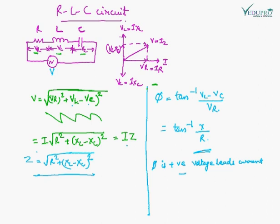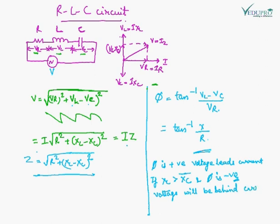If phi is positive, voltage leads the current, which occurs when XL is greater than XC. If phi is negative, it implies that the voltage lags behind the current, which occurs when XL is less than XC.